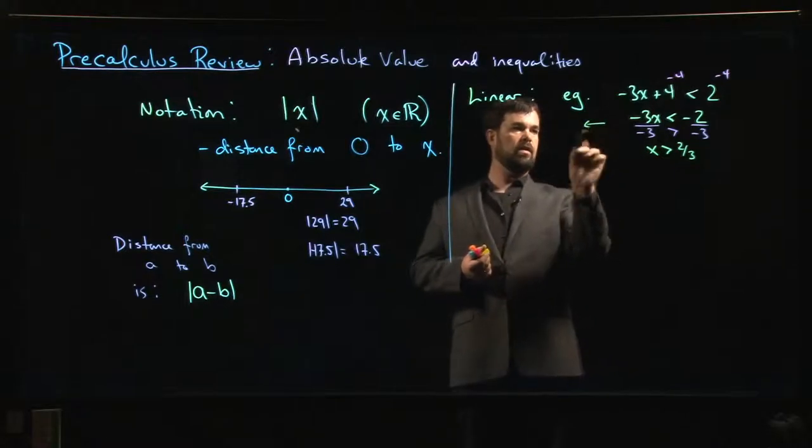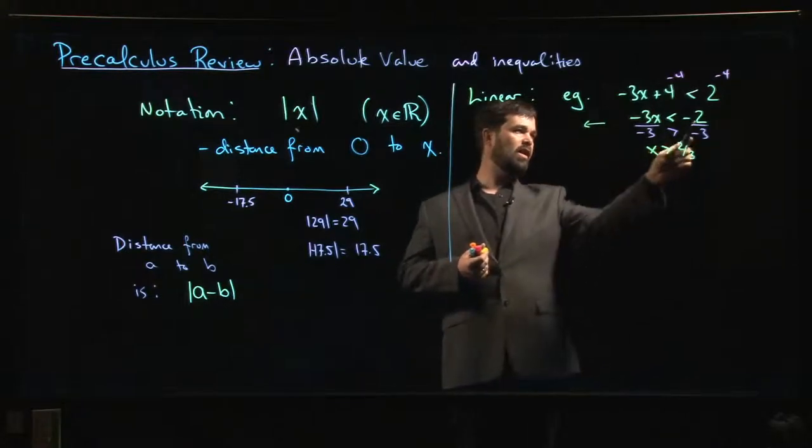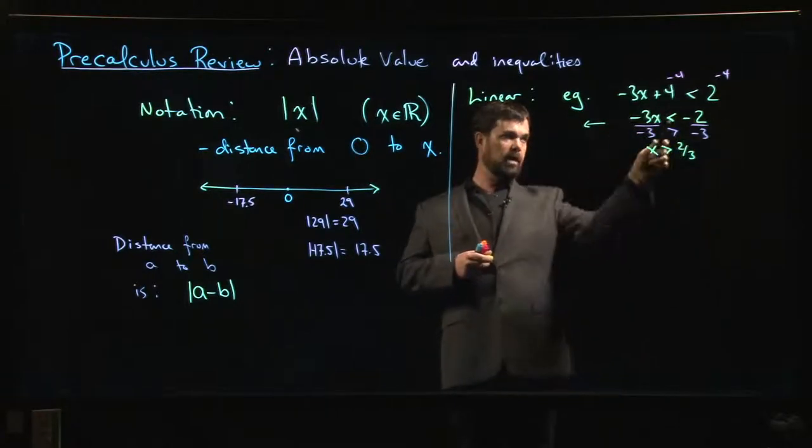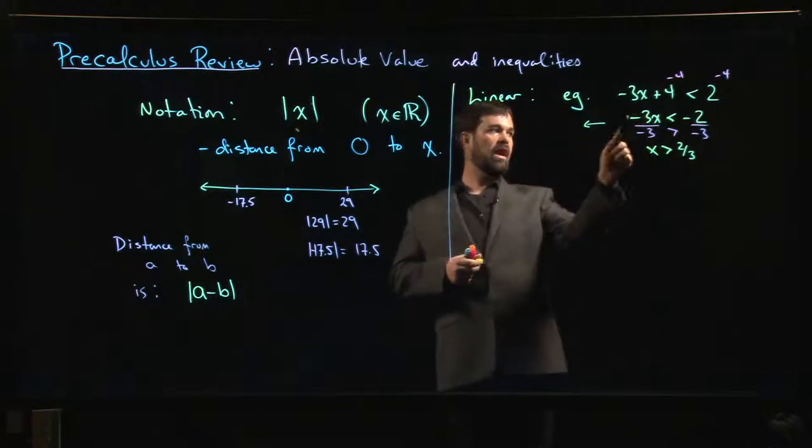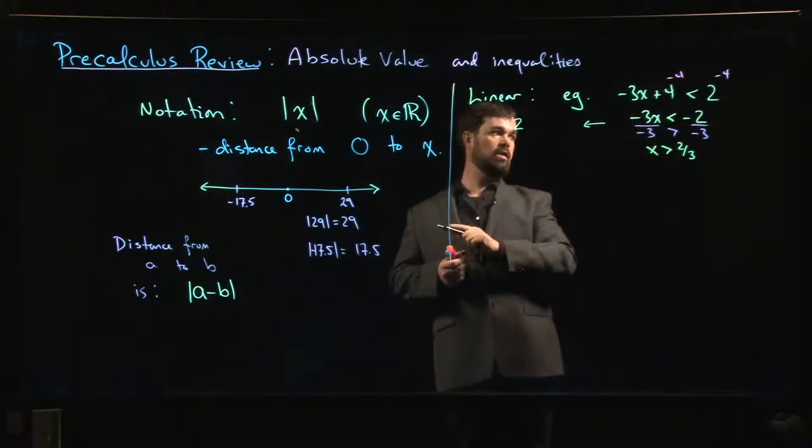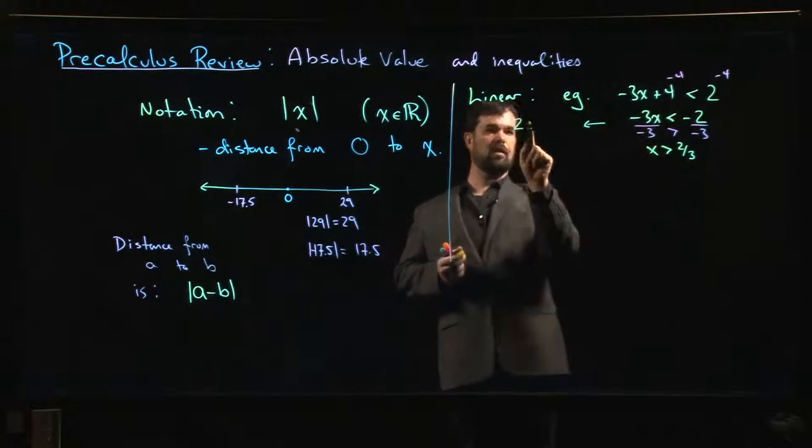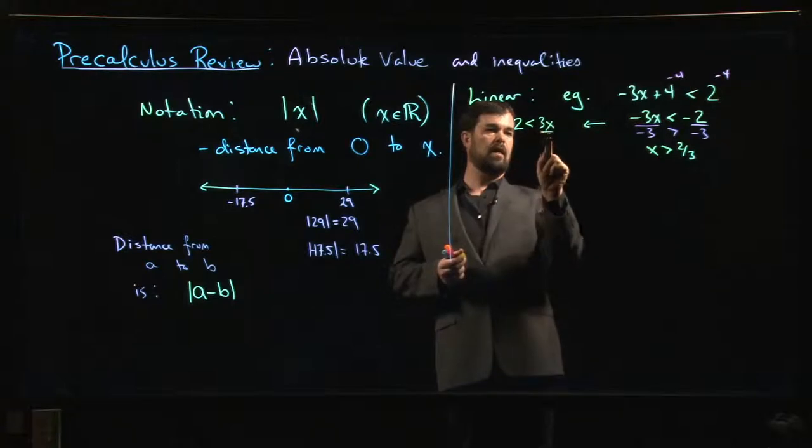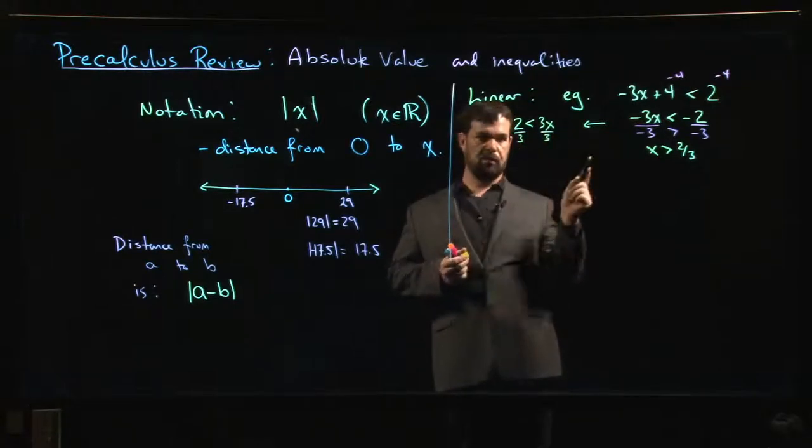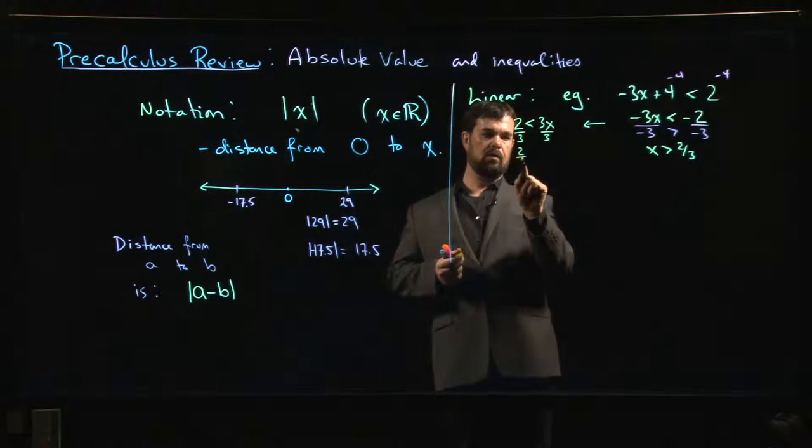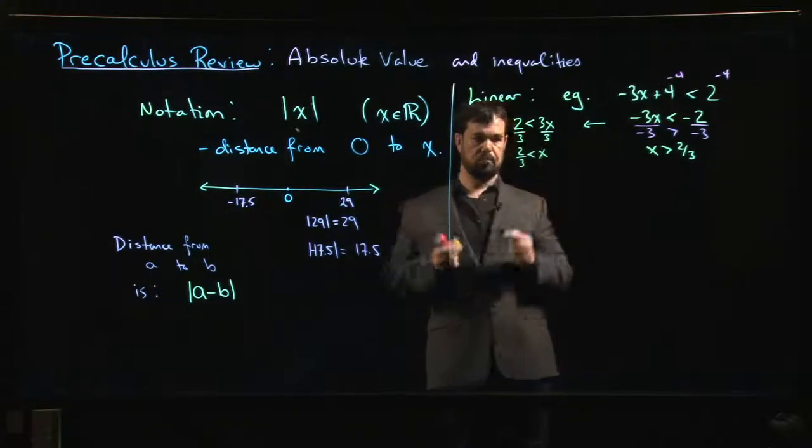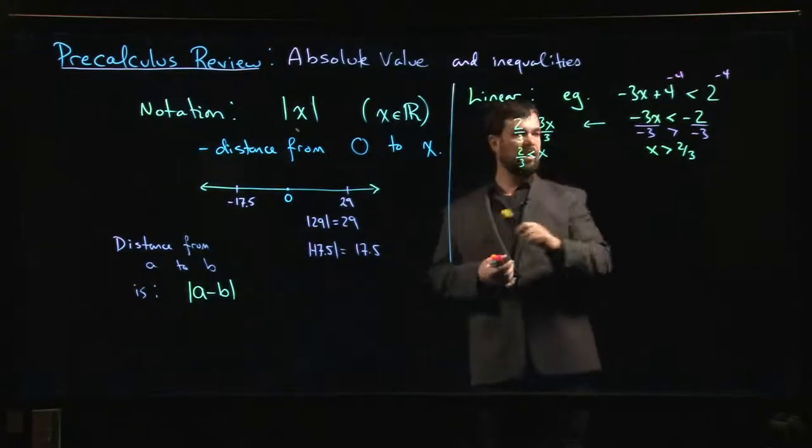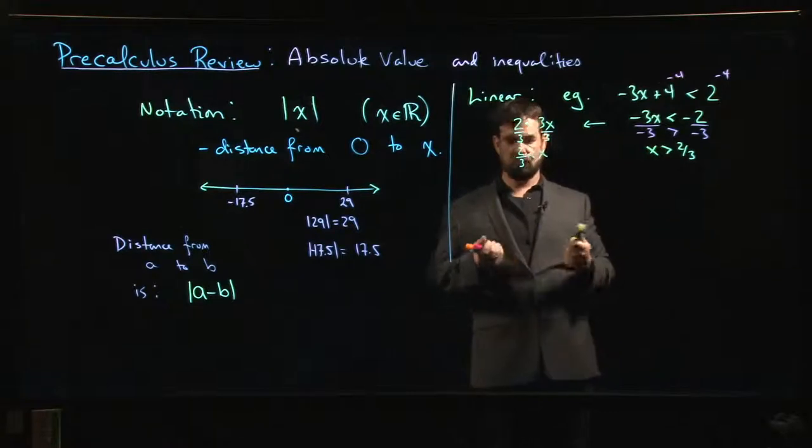Another way to do it is, rather than doing it like that, you could say, let's move the 2 to that side, move the 3x to that side. Because you never have to worry about negatives when you're adding and subtracting. So if I add 2 to both sides, now I've got a 2 on the left. If I add 3x to both sides, I have 3x on the right, and I'm allowed to divide by 3, 3 is a positive number, and I get 2 thirds less than x. Those are the same thing. 2 thirds less than x is the same statement as x is bigger than 2 thirds, those are equivalent.